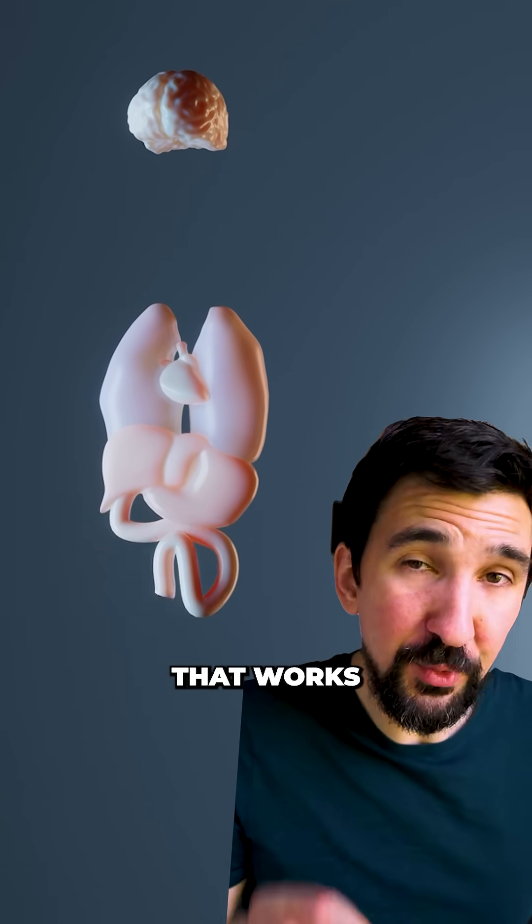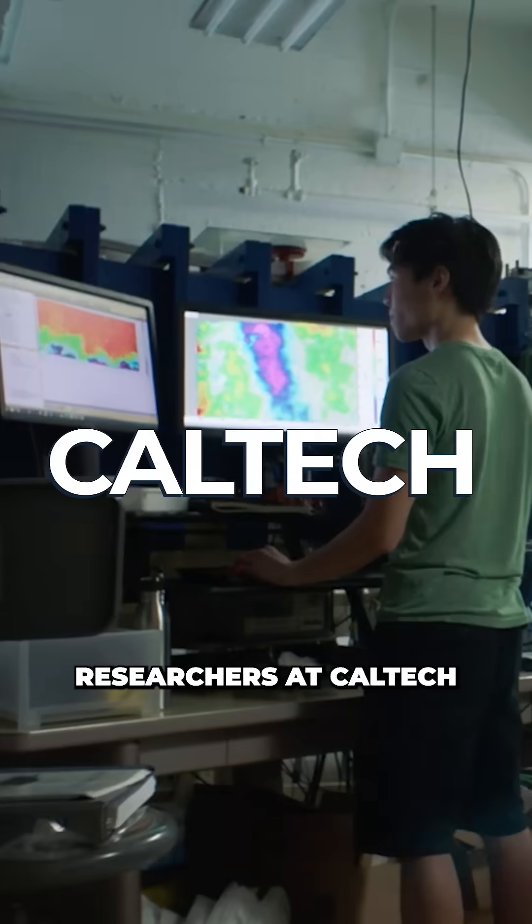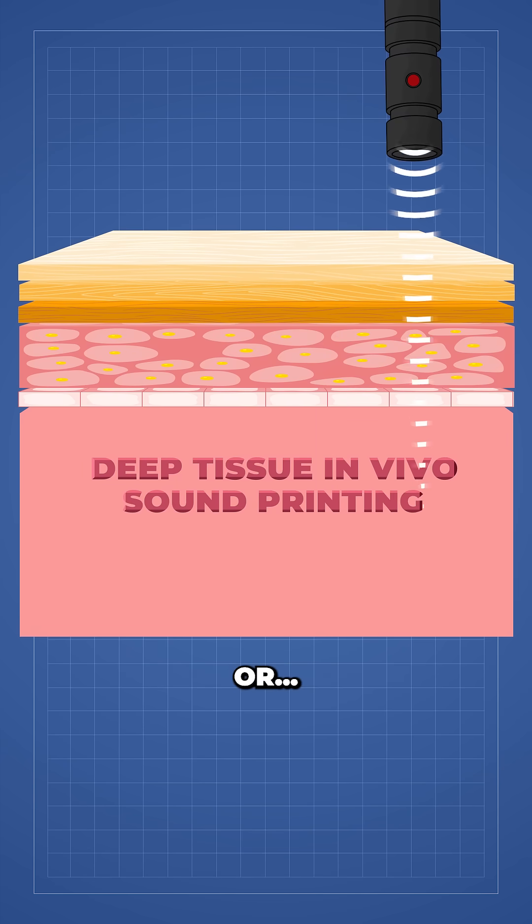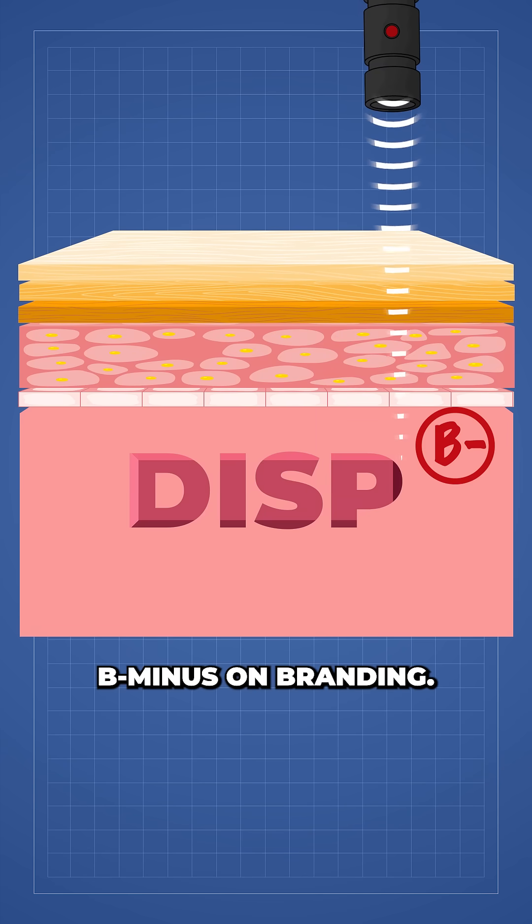Scientists just built a 3D printer that works inside your body. Researchers at Caltech have introduced a technique called Deep Tissue In Vivo Sound Printing, or DISP. B-minus on branding.